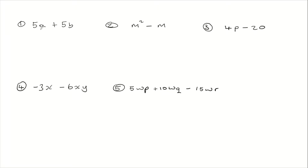So let's look at the first example. We're given 5a plus 5b to factorize. The first thing we're going to look at is the numbers. What is the highest common factor of 5 and 5? It would be 5, because 5 is common to both terms. So we're going to take that out and then open a bracket. When you look at the letters, we have a and we have b — there's nothing common between them. So we're going to use this 5 to divide each term.